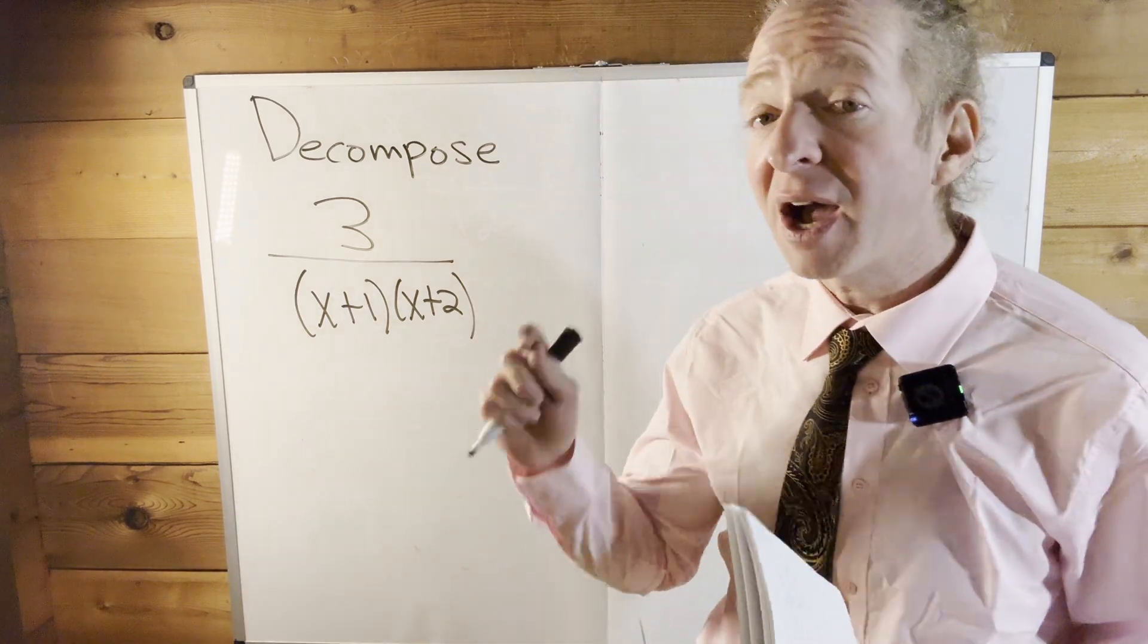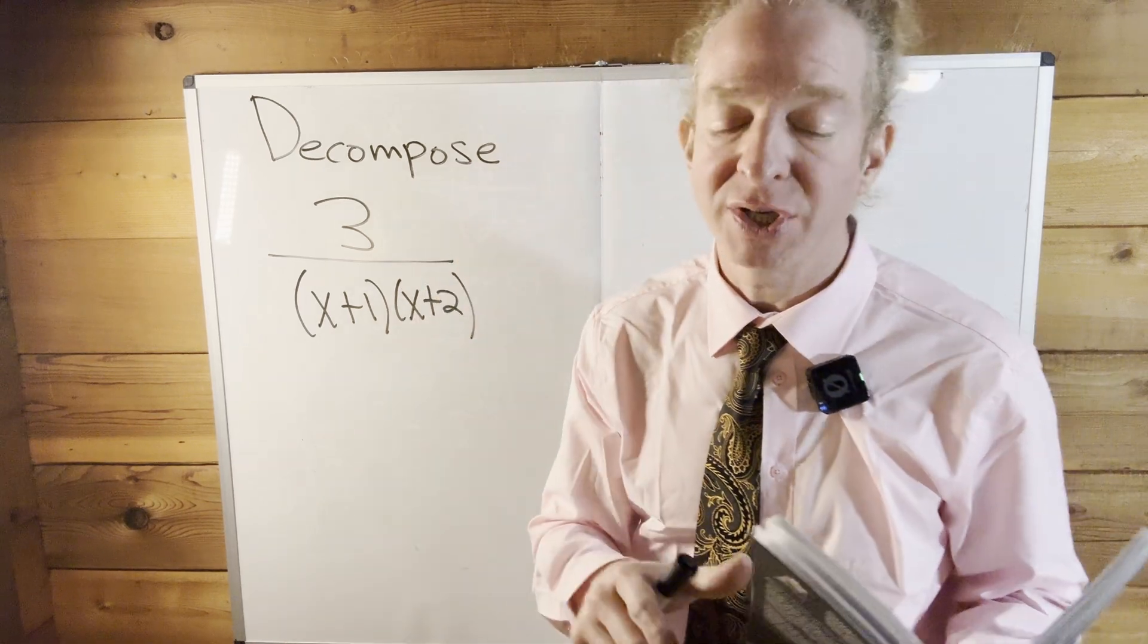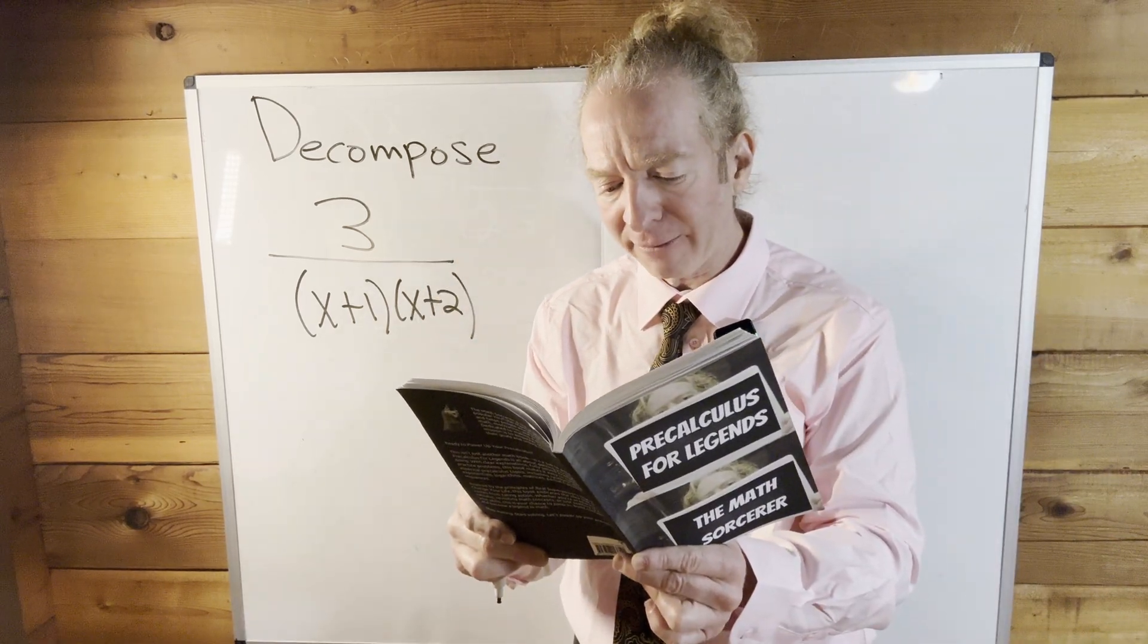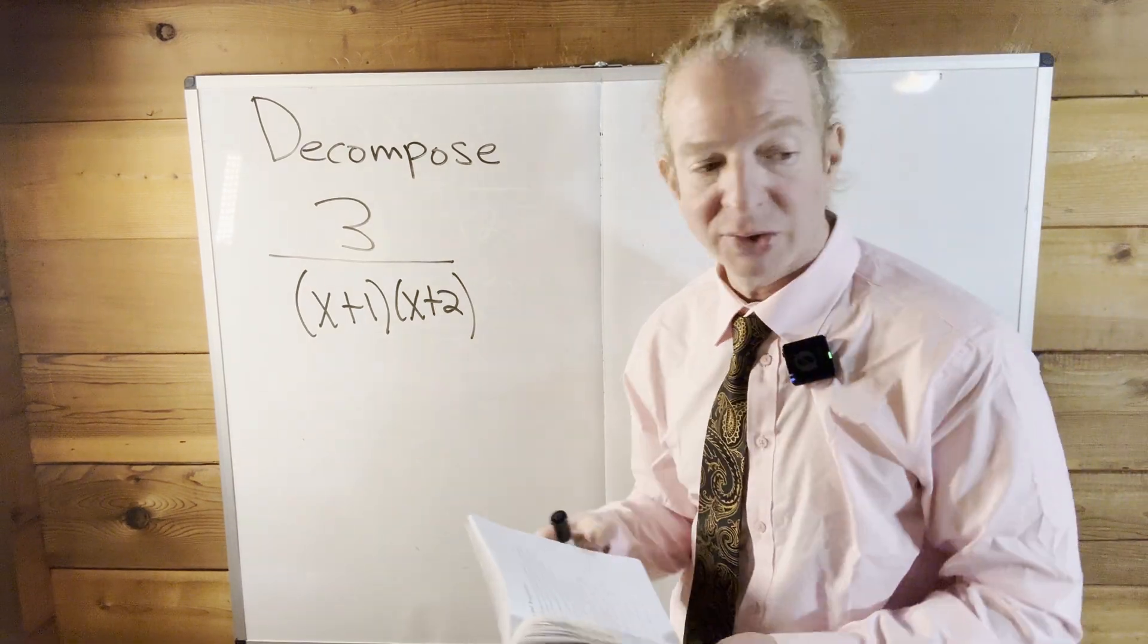It's called the cover-up method, and it's a technique that is used in partial fraction decomposition. So this is an example from my book, Pre-Calculus for Legends, and I've copied it down correctly, so it looks good.